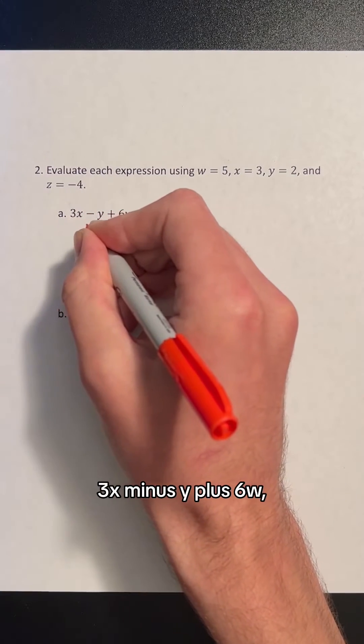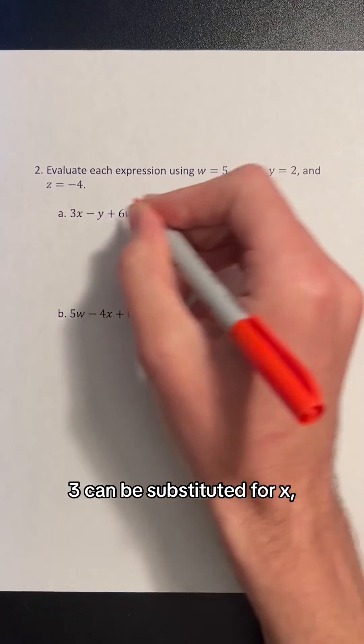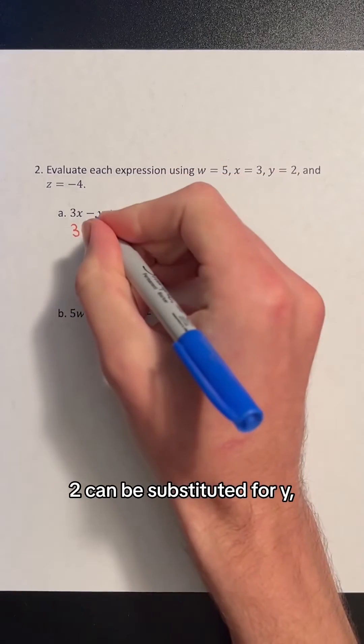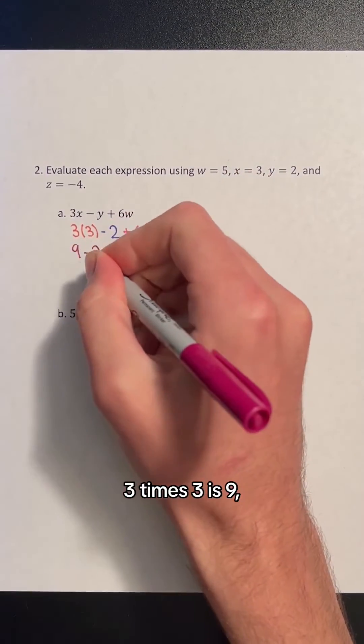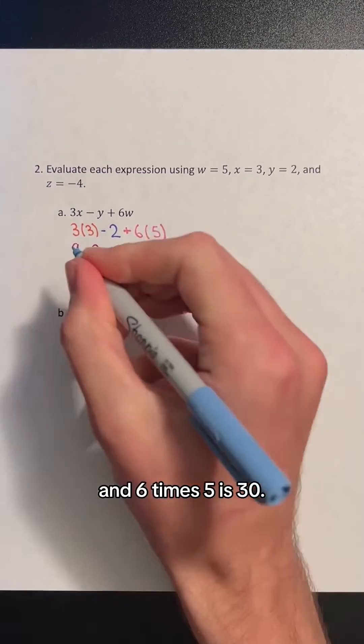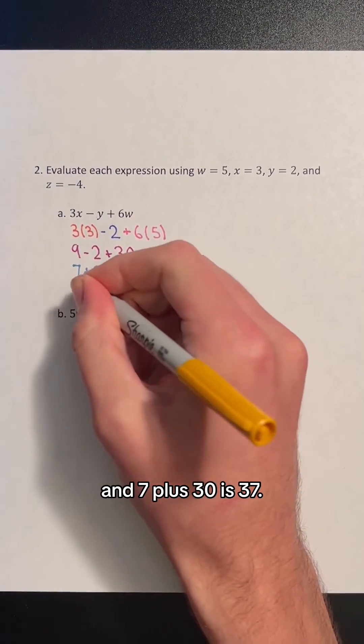In the first expression, 3x minus y plus 6w, 3 can be substituted for x, 2 can be substituted for y, and 5 can be substituted for w. 3 times 3 is 9, and 6 times 5 is 30. 9 minus 2 is 7, and 7 plus 30 is 37.